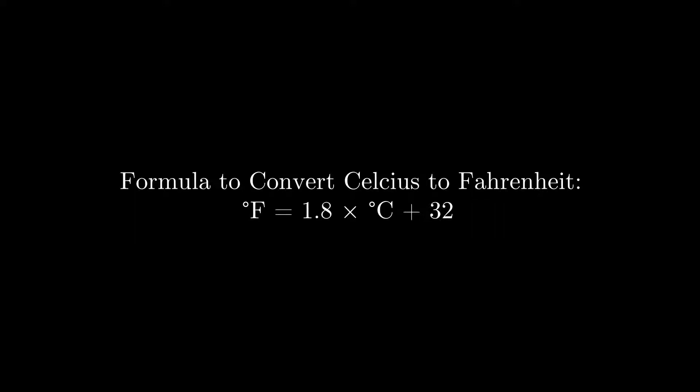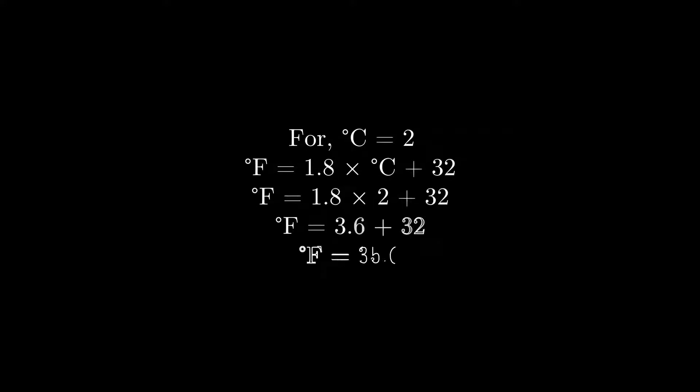We will put Celsius value from 1 to 10 in this equation and store the corresponding Fahrenheit value. For example, I have here put Celsius value equals 2 degrees Celsius and I have got 35.6 degrees Fahrenheit as the resultant value. Same we have to do with every Celsius value from 1 to 10, and we will get this as a result.